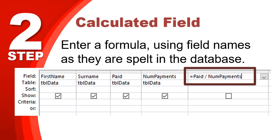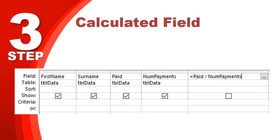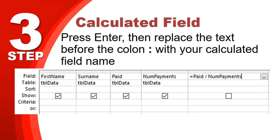That's step two done. Step three: press Enter. Once you do that, some text will be added automatically to your calculated field at the front, then a colon, then your actual calculation. It will look something like: expr1: [Paid]/[NumPayments]. The values now have square brackets around them. I recommend not using spaces in field names, but if you do have spaces, make sure you put square brackets around those names — otherwise Access will think they are two different fields.